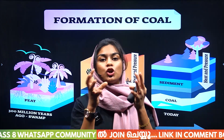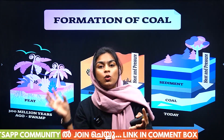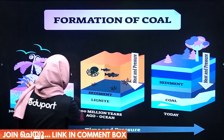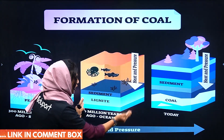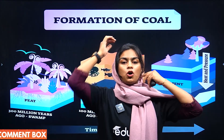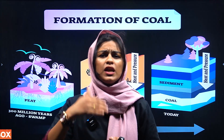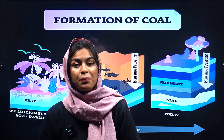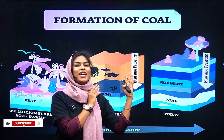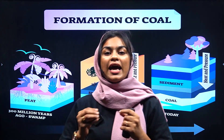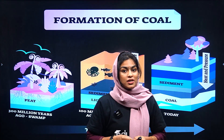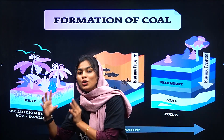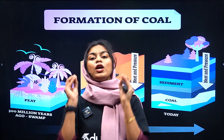The dead remains of plants and animals got buried under the water or the soil. Under high temperature and pressure, these dead remains of plants and animals were converted into a fuel — coal. So dead remains of plants and animals got buried under the soil millions of years ago, and under high temperature and pressure they got converted into coal, which is what we use as a fuel today.